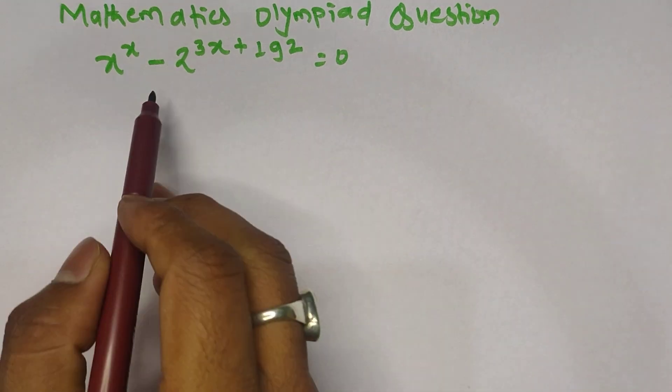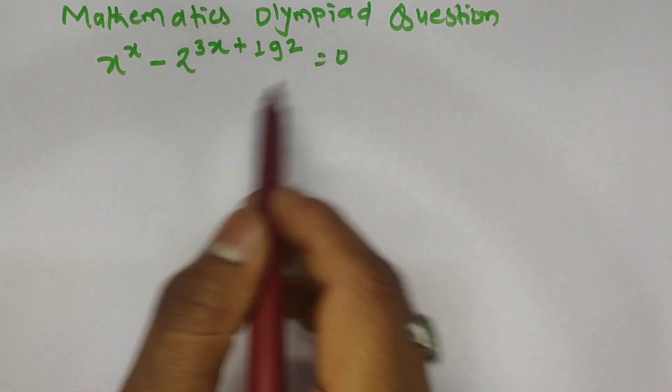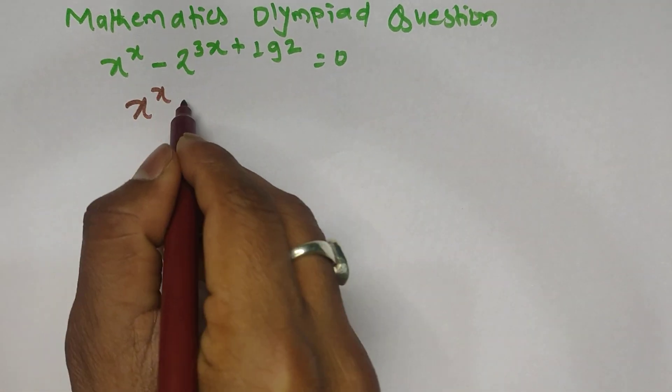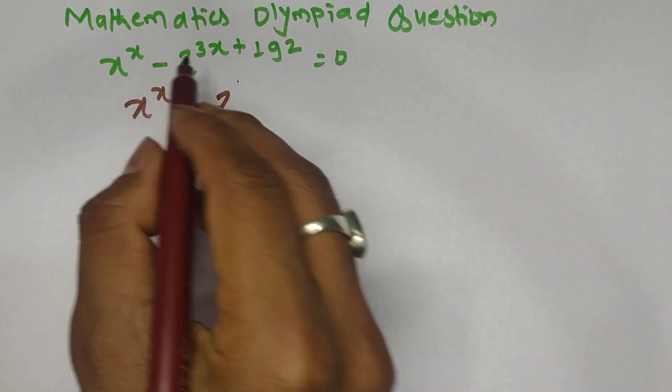Let's move this term to the right side, then it will become plus. When you move this term to the right side, we get x power x equals 2 power, and from here...